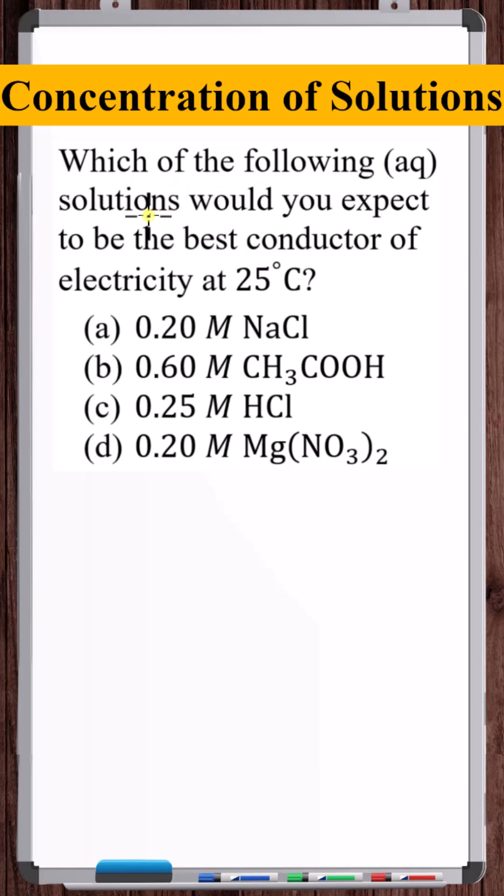Which of the following aqueous solutions would you expect to be the best conductor of electricity at 25 degrees Celsius? A 0.2 molarity sodium chloride aqueous solution, a 0.6 molarity acetic acid solution, a 0.25 molarity hydrochloric acid solution, or a 0.2 molarity magnesium nitrate solution.